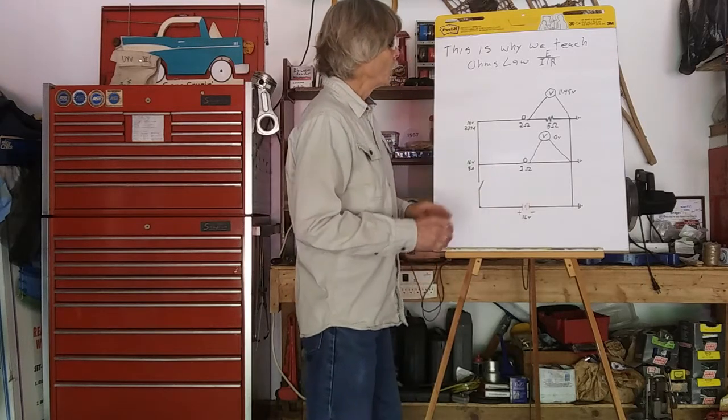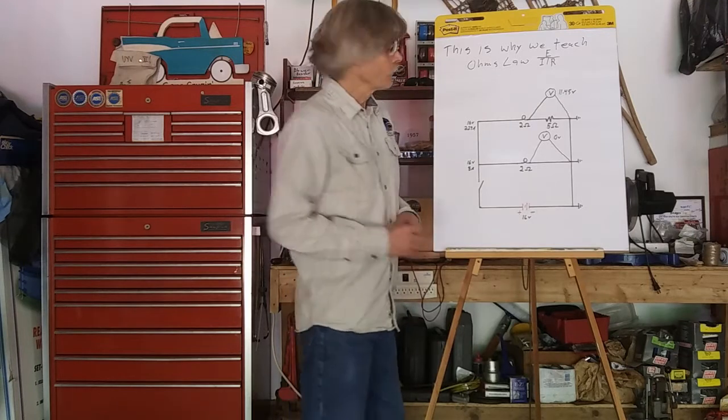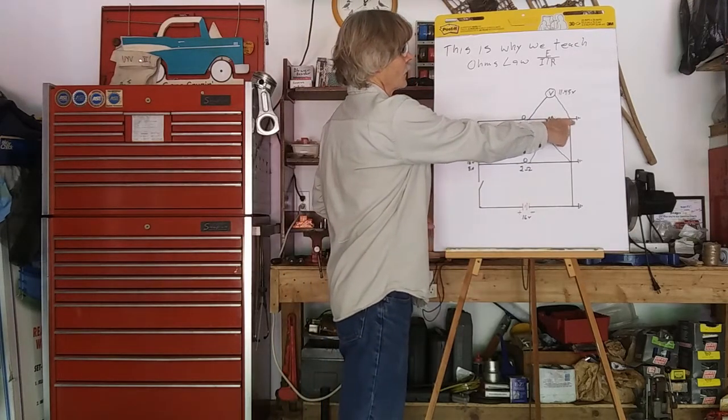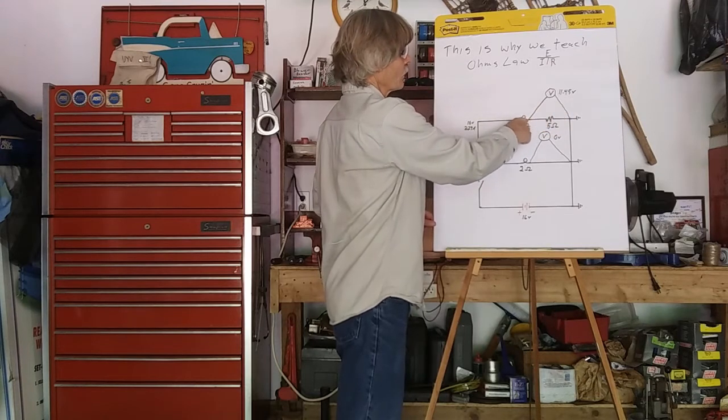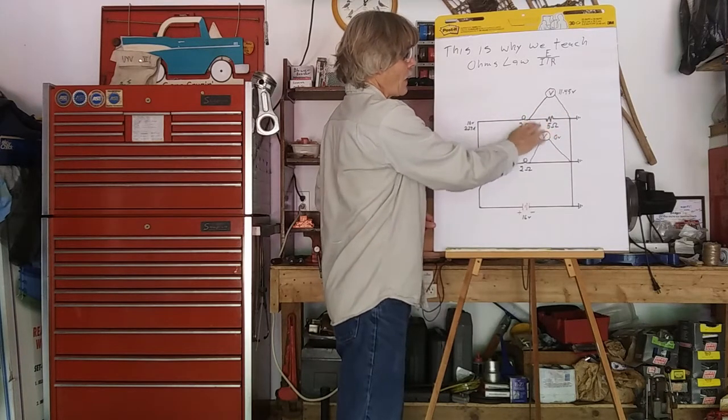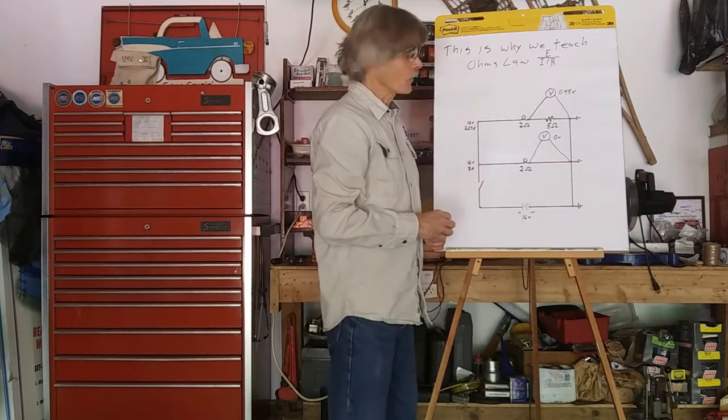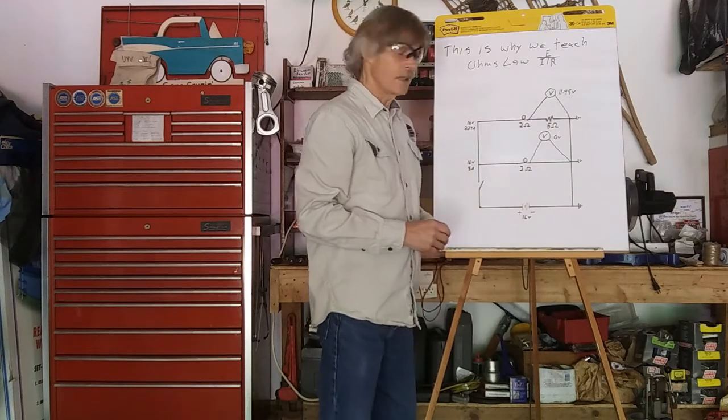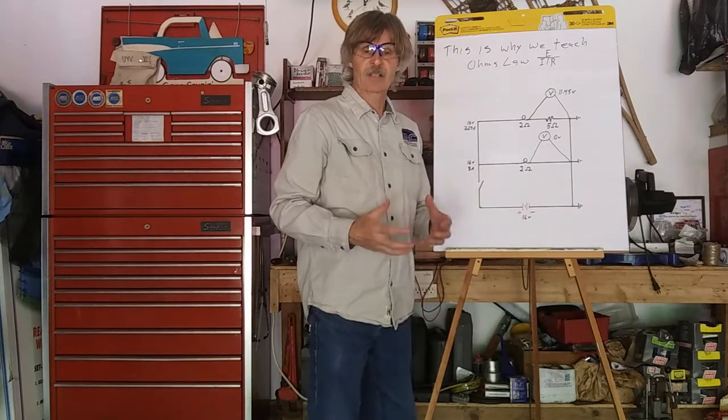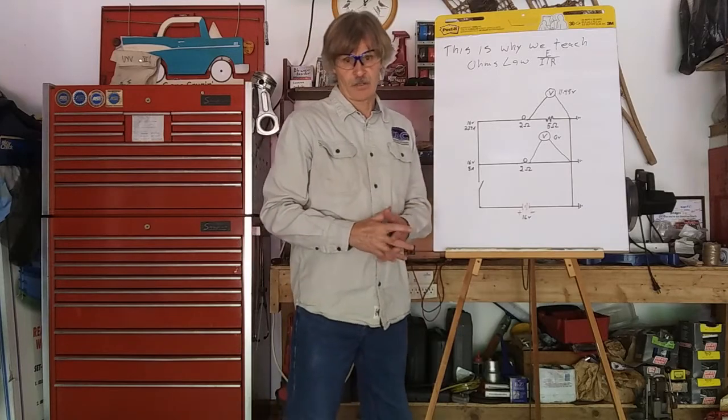After that, we took a ground lead, and we hooked it to our ground here. We took that ground lead over here and attached it to the bulb, bypassing that resistance in the ground circuit. And the bulb got bright, confirming our diagnosis that we had excessive resistance in that ground circuit.